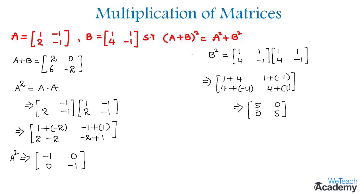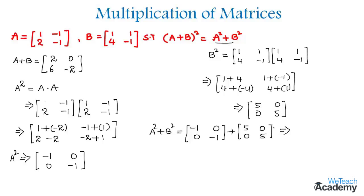Now let us find the LHS, which is A² plus B². We already know matrix A², so we write A² plus B², which is 5, 0, 0, 5. By adding both matrices, we get minus one plus five which is four, then zero plus zero is zero, in the next row zero, and minus one plus five is four again. So this is the matrix for A² plus B².